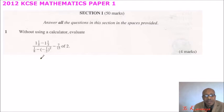So we have question number 1. Without using a calculator, evaluate. So the instruction is you don't use a calculator. You are supposed to show the working without using the calculator. So number 1, we are told this is 1 and 1 over 5 minus 1 and 1 divided by 1 over 8 minus into bracket minus a half squared minus 7 over 15 of 2.